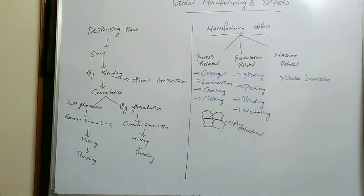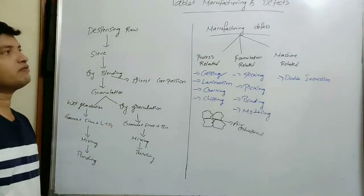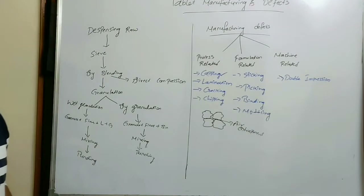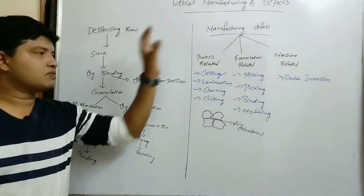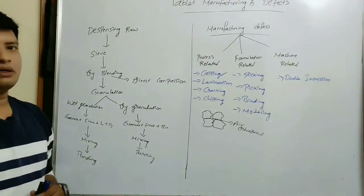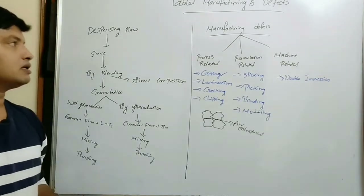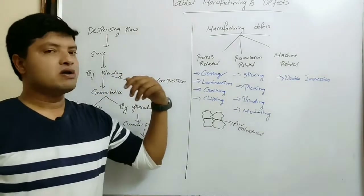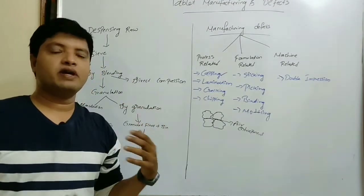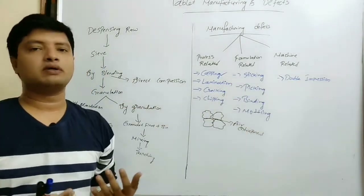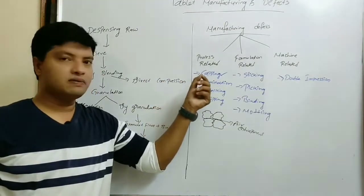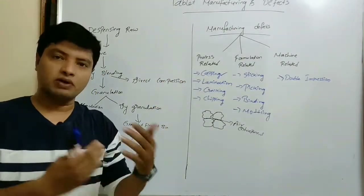This is the overview of the tablet manufacturing process. Now we go to the defects of tablets. In the manufacturing of tablets, what are the defects we encounter while manufacturing? Depending on the variables, we have three types of defects we are going to encounter: process related, formulation related, and machine related.